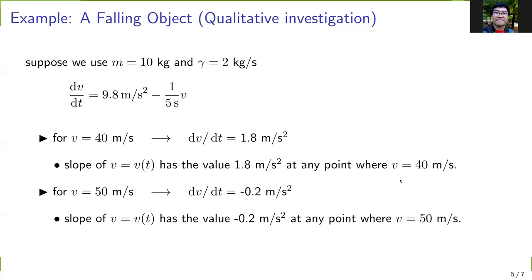Now if v = 50 m/s, then dv/dt = -0.2 m/s², or the slope of v in a plot of v versus t would have a value of -0.2 m/s² at any point where v is 50 m/s.